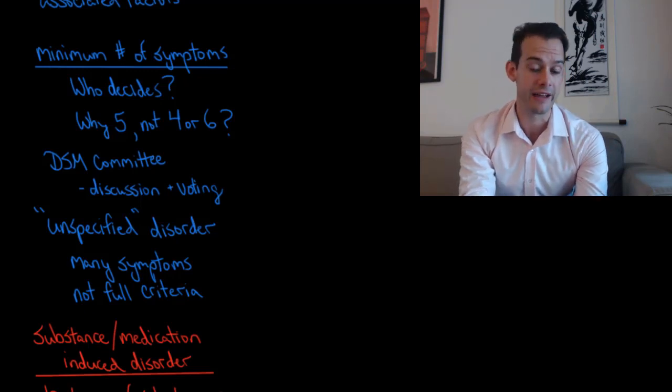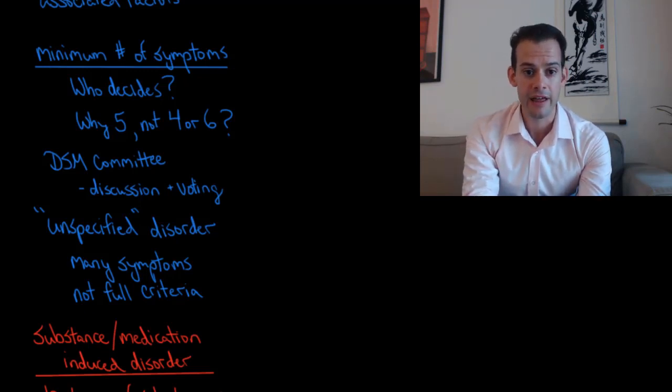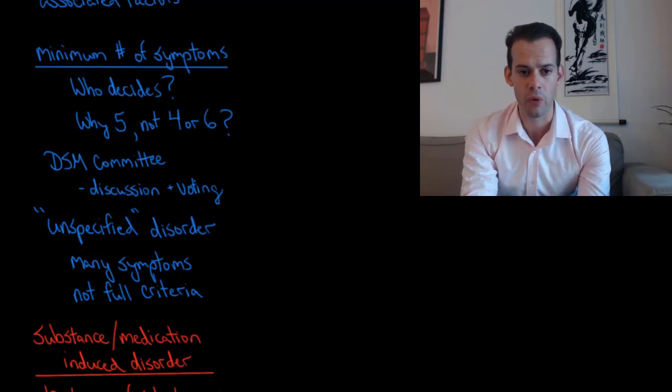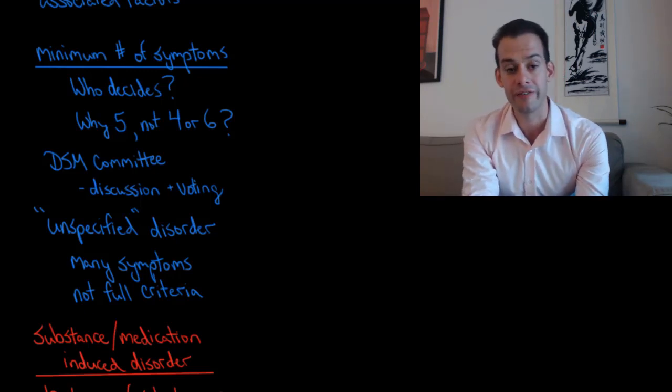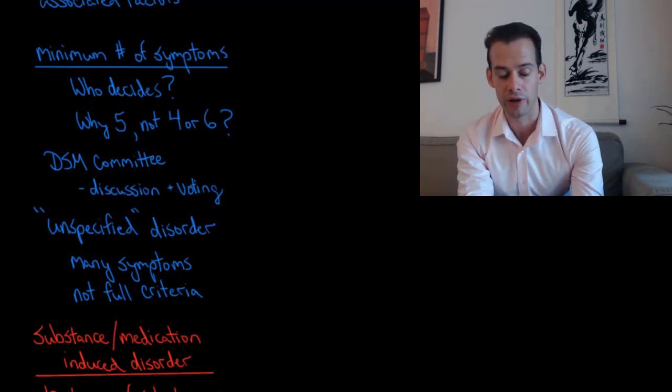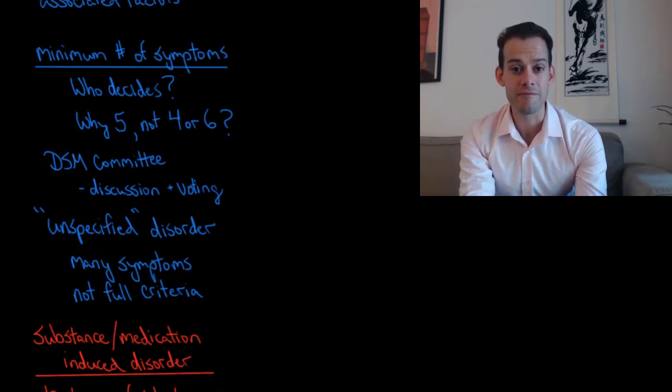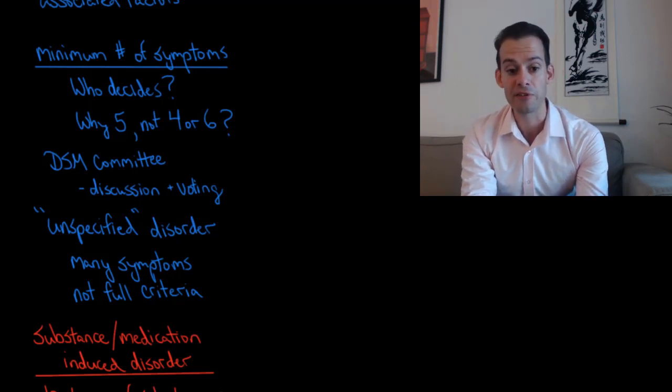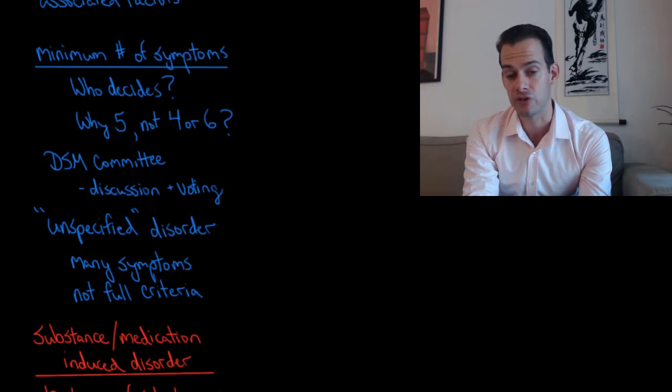Now to be fair to the DSM-5 and the DSM-5 committee, they also list in the DSM-5 what are called unspecified disorders. And so it's possible to get a diagnosis of an unspecified version of a disorder. And what this means is that a person might have many symptoms, but they don't reach the full criteria for a particular disorder.